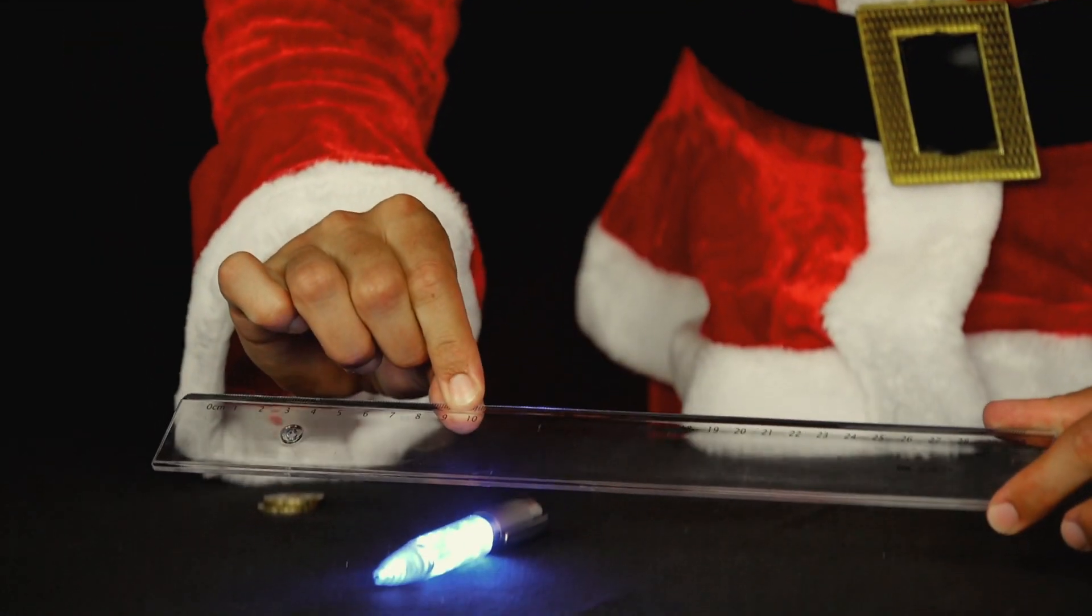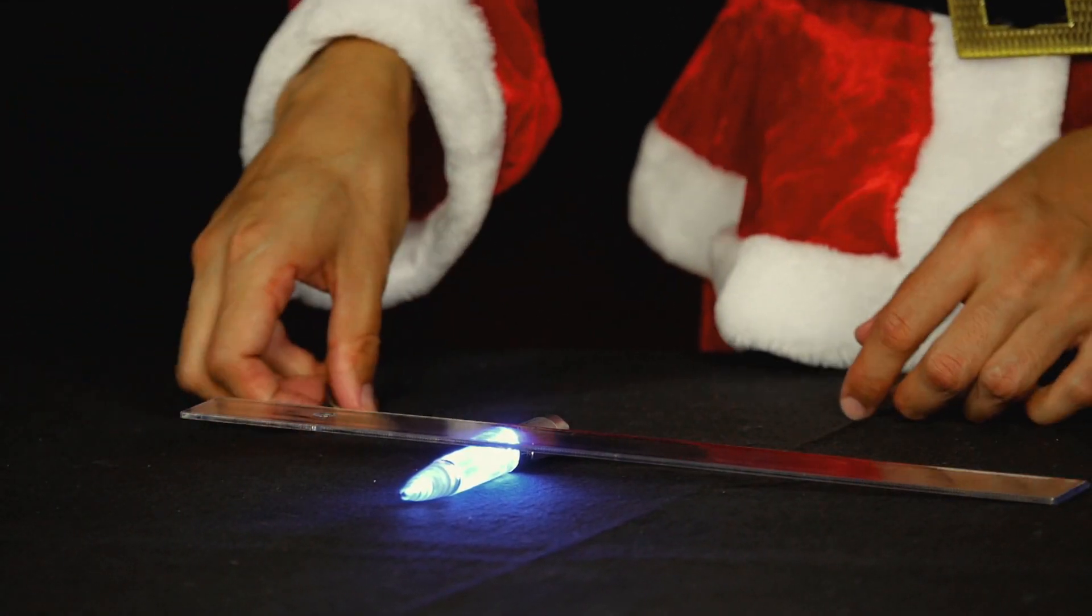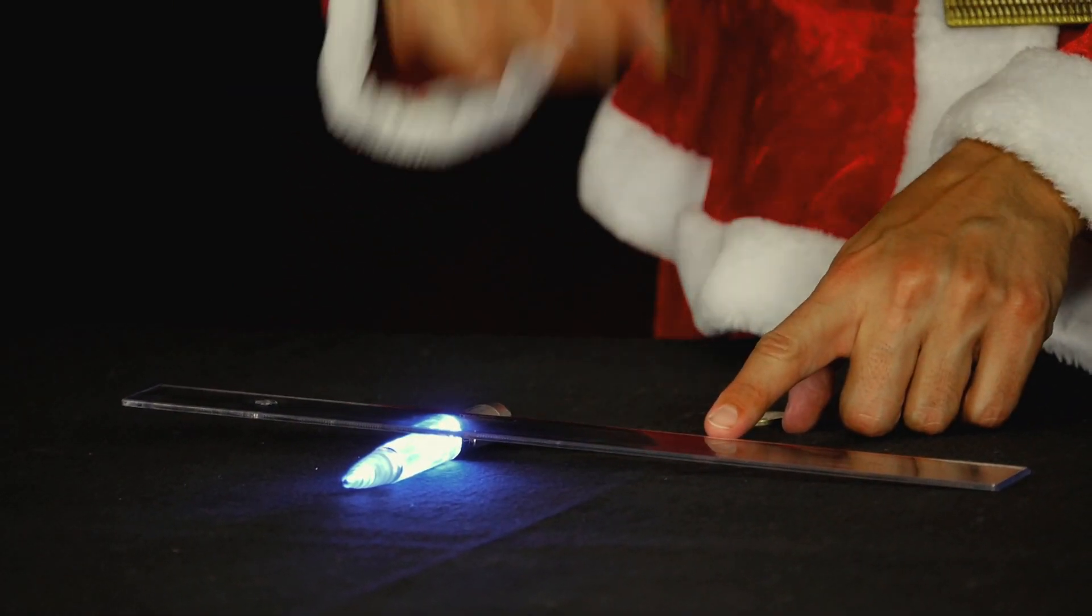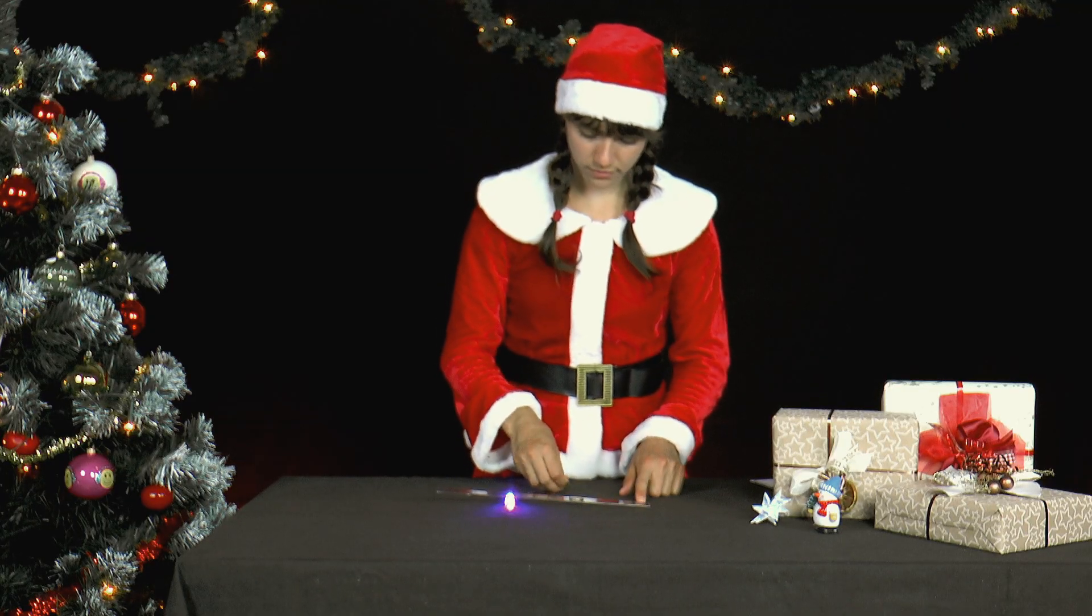At the 10cm marking, she puts the ruler on the pen. Then she puts a coin on the ruler at the 20cm and at the 30cm mark.